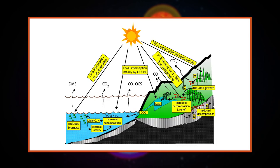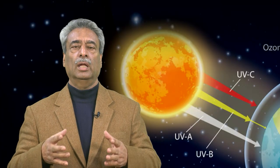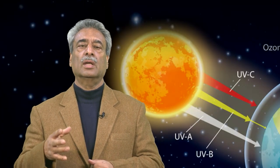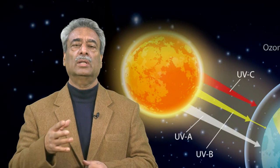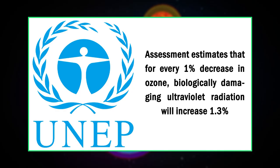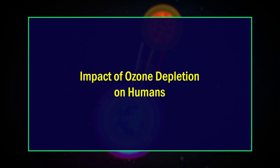CFCs are also used as propellants for aerosol sprays. Reductions in ozone levels will lead to higher levels of UVB radiation reaching Earth's surface. The sun's output of UVB does not change; rather, less ozone means less protection and hence more UVB reaches Earth. In Antarctica, studies have shown that the amount of UVB radiation at the surface can double during the annual ozone hole. The UN Environment Programme estimates that for every one percent decrease in ozone, biologically damaging ultraviolet radiation will increase by 1.3 percent.